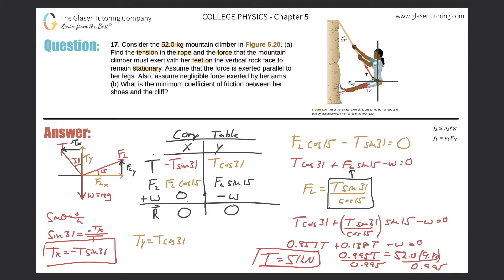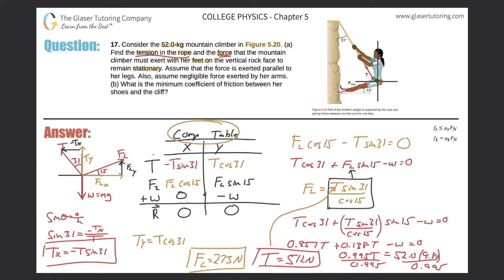We found the tension: T equals 512 newtons. Now we need the force in the legs. We take this result and plug it into the equation F sub L equals T sine 31 over cosine 15. So F sub L equals 512 times sine 31 divided by cosine 15, which gives 273 newtons. We found the tension and the force in the legs. Once we set up the component table and recognized the system is stationary — sum of forces equals zero — we had two equations and two unknowns, and it was just math.